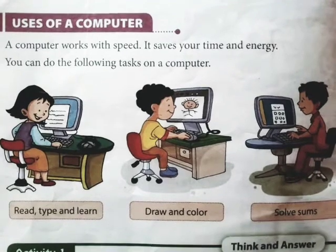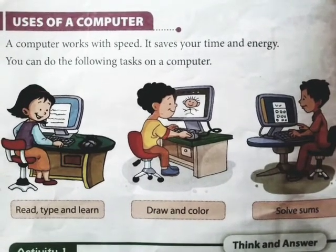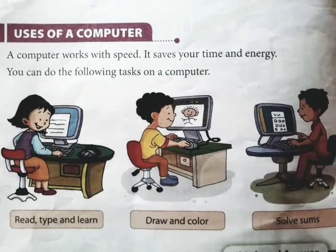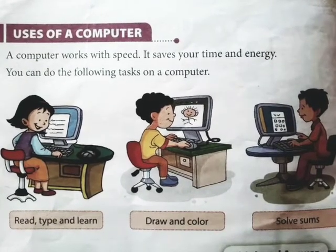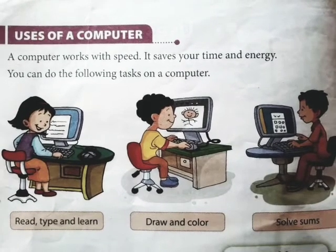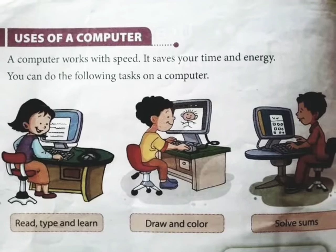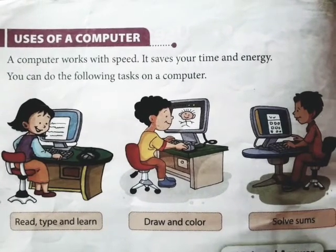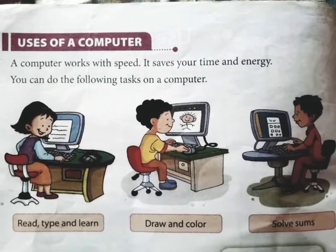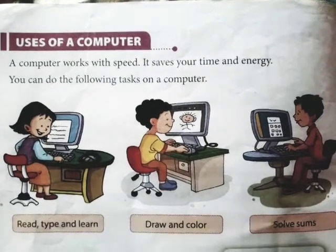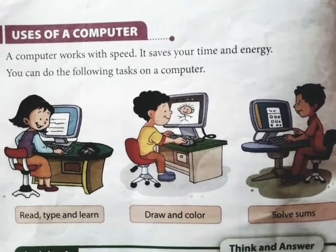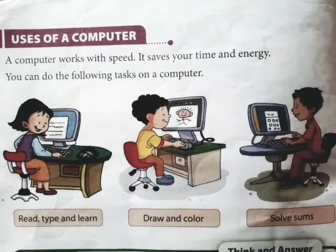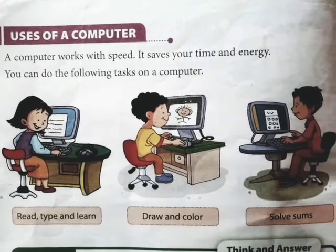Now let us see the uses of computer. A computer works with speed. What does it mean, students? A computer can work very fast — it works faster than humans. It saves your time and energy. If you want to calculate large sums, it takes a lot of time to calculate that manually, but if you calculate using a computer, you can quickly solve that sum.